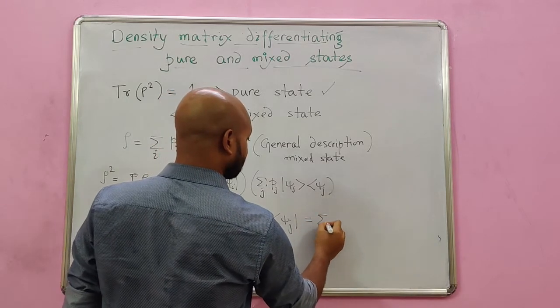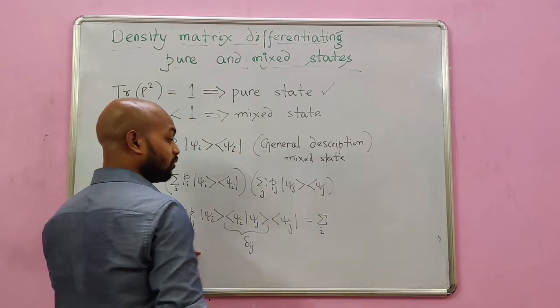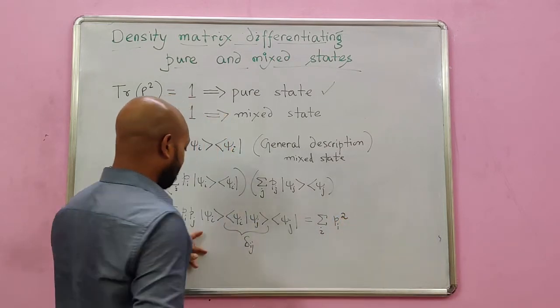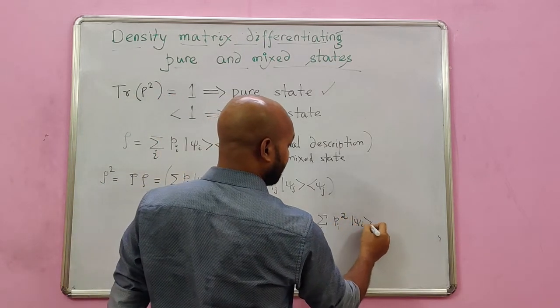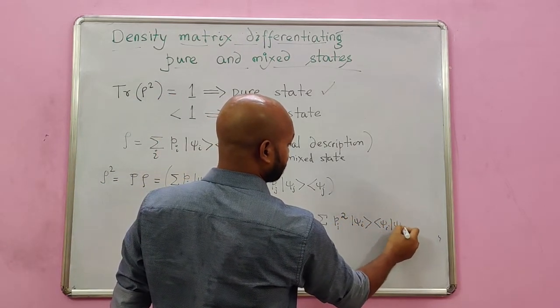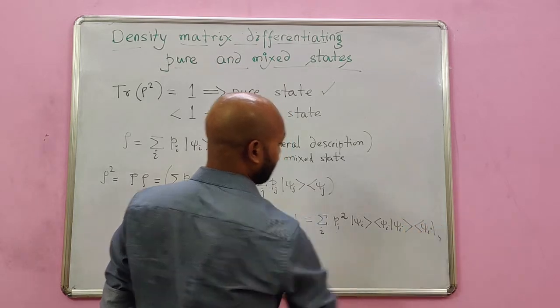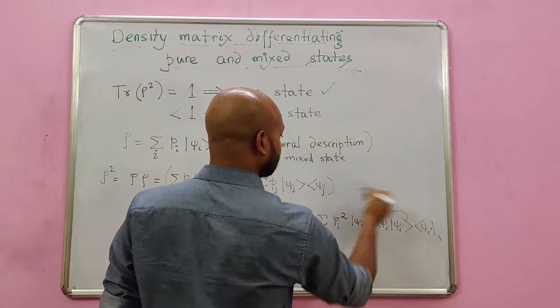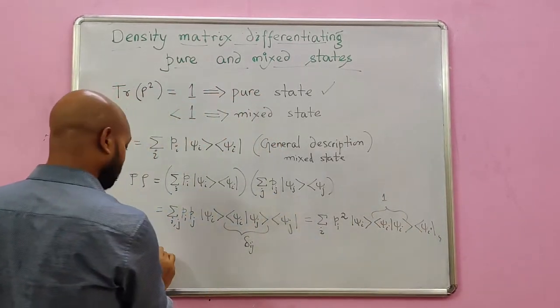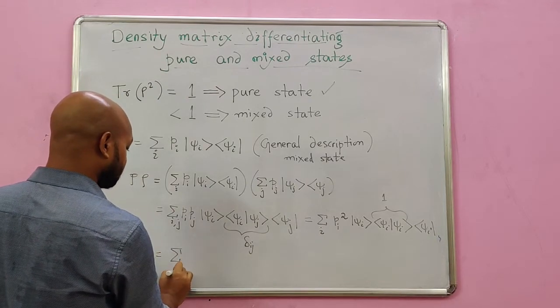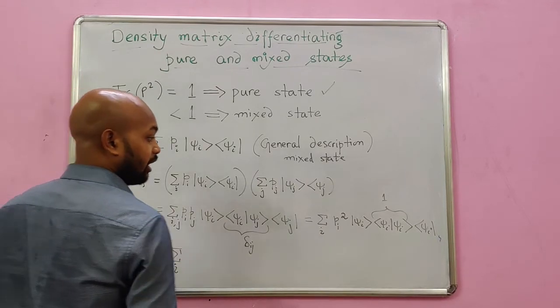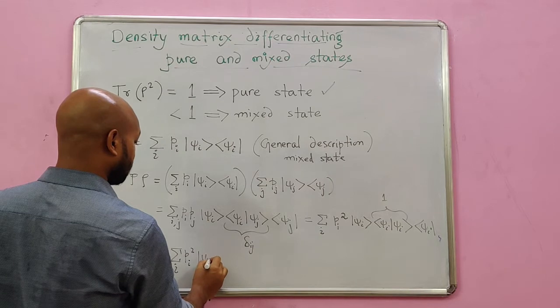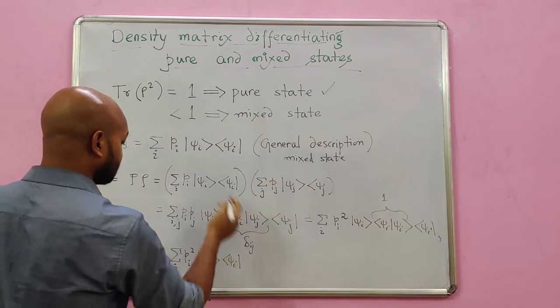And this is the reason the summation runs over i only. The pj also becomes pi, so pi and pi becomes pi squared. And then I have psi i, everything becomes psi i. Psi i, psi i. And now this thing is 1.